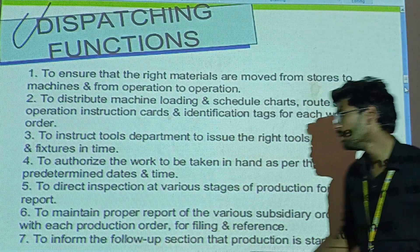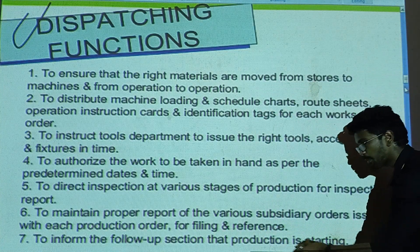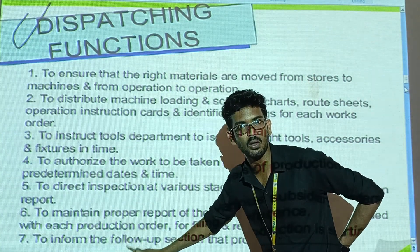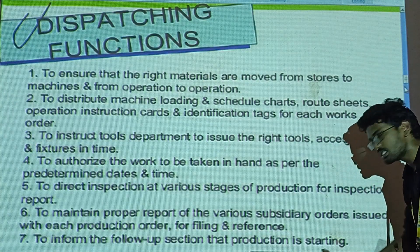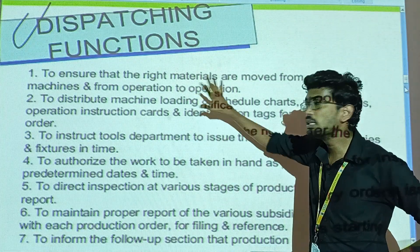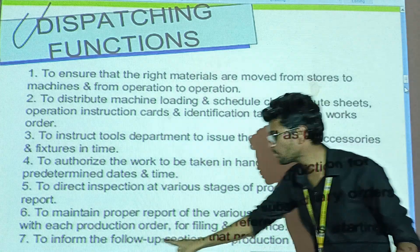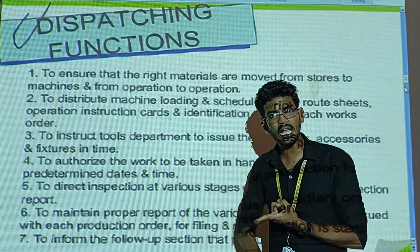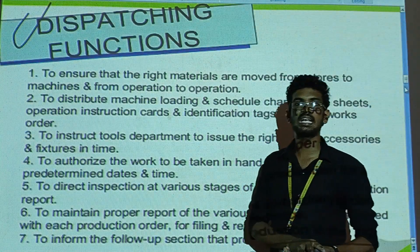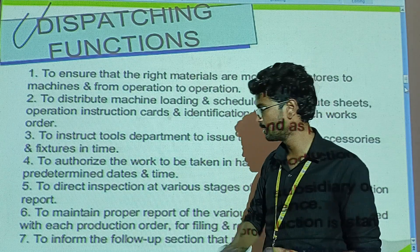The seventh function is to perform the follow-up section — that is, to follow up that production is progressing as planned. Follow-up is also called expediting, or the expediting department. This is a very important concept: the follow-up or expediting department monitors how production is going.